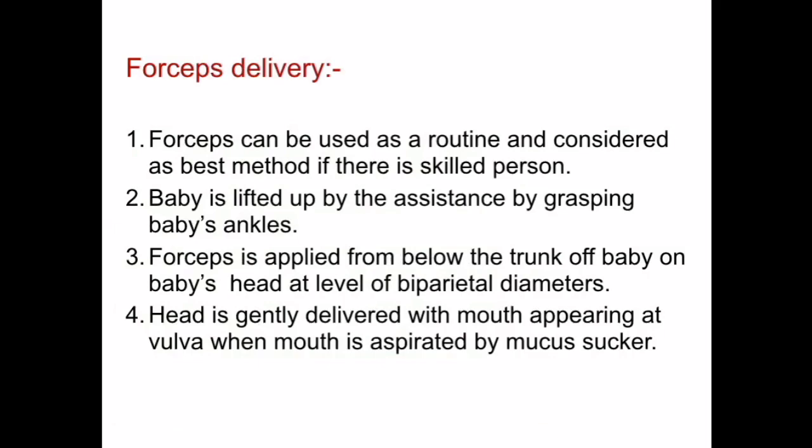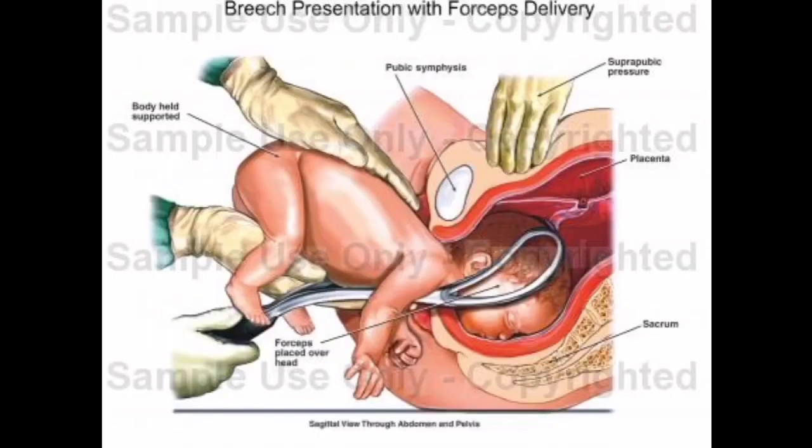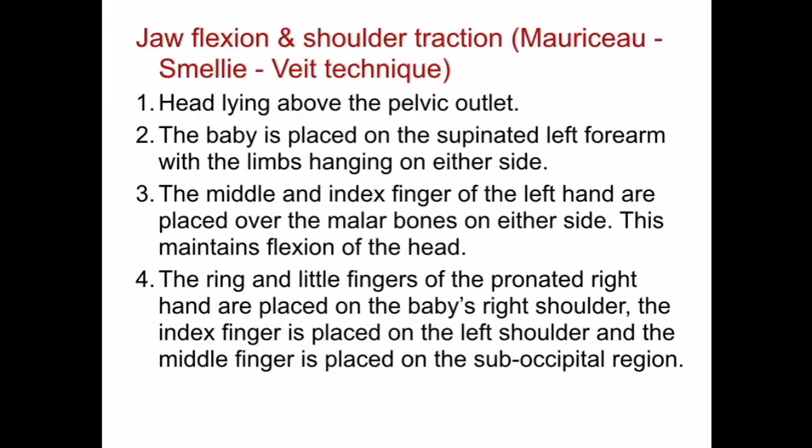Forceps delivery is also an option and is considered the best method when a skilled person is available. The baby is lifted up by an assistant grasping the baby's ankles. Forceps are applied below the trunk on the baby's head at the level of the parietal diameters and the head is gently delivered, with the mouth appearing at the vulva where it is aspirated with a mucus sucker.